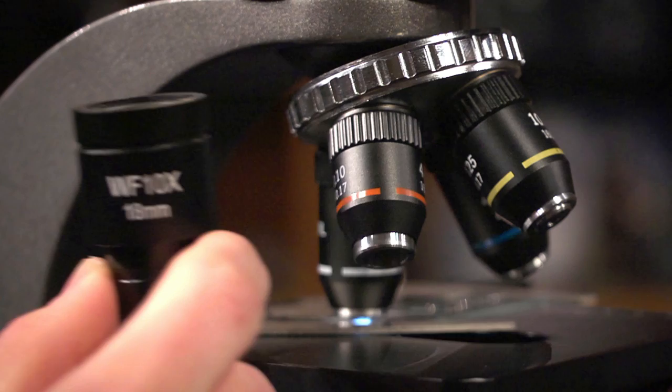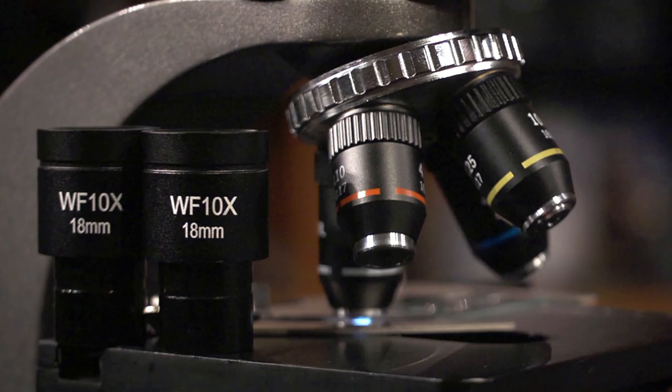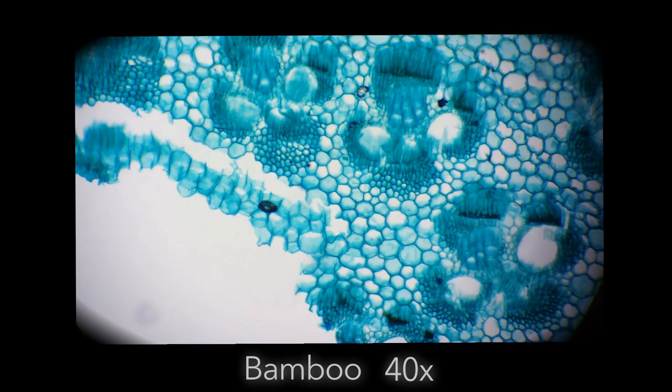The MS-160 comes with a set of 10 power wide field eyepieces which are great for all-around research. We've also included a 16 power wide field set for an even closer view. The benefit of having a wide field eyepiece is being able to inspect your slide with a much larger viewing area.